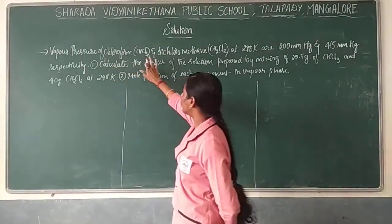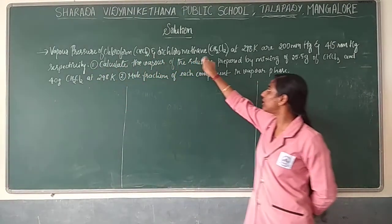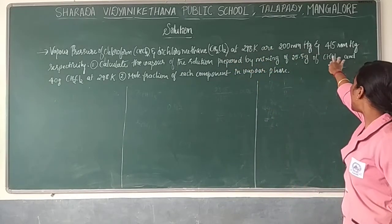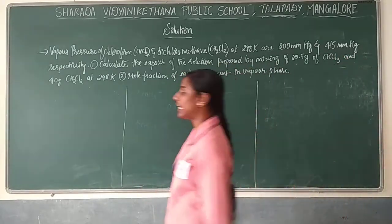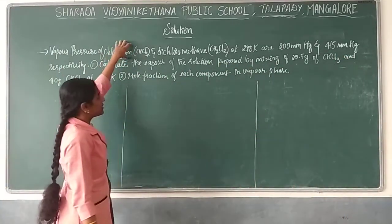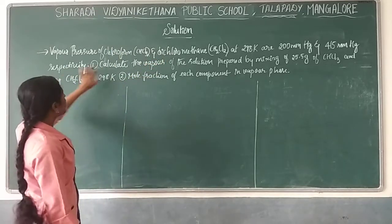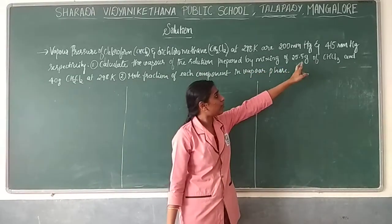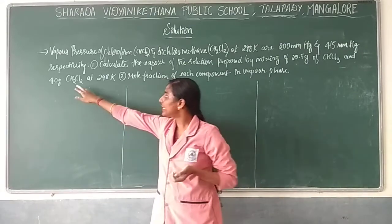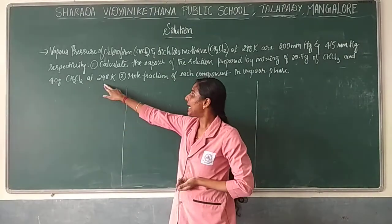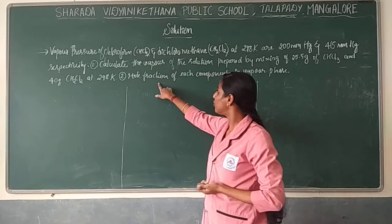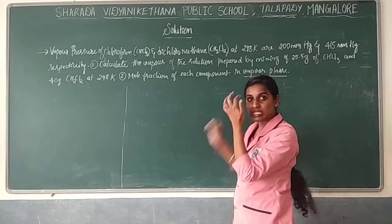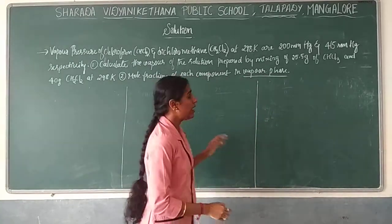The vapor pressure of chloroform (CHCl3) and dichloromethane (CH2Cl2) at 298 K are 200 mmHg and 450 mmHg respectively. You are supposed to calculate the vapor pressure of the solution prepared by mixing 25.5 grams of chloroform and 40 grams of dichloromethane. The second part asks for the mole fraction of each component in the vapor phase.